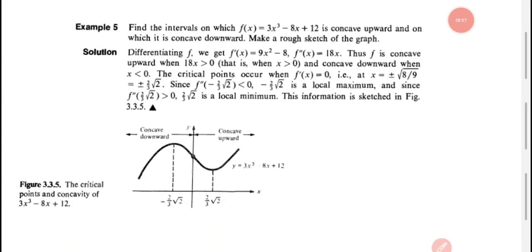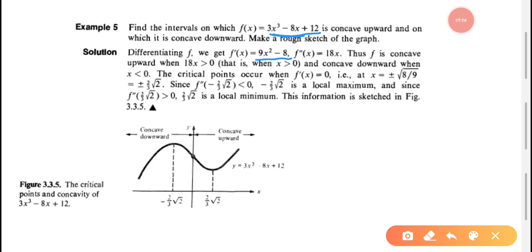Next question: find the intervals on which f(x) = 3x³ - 8x + 12 is concave upward and on which it is concave downward, and make a rough sketch of the graph. We differentiate: f'(x) = 9x² - 8, and f''(x) = 18x. Setting f''(x) = 0 gives x = 0 as the inflection point candidate.